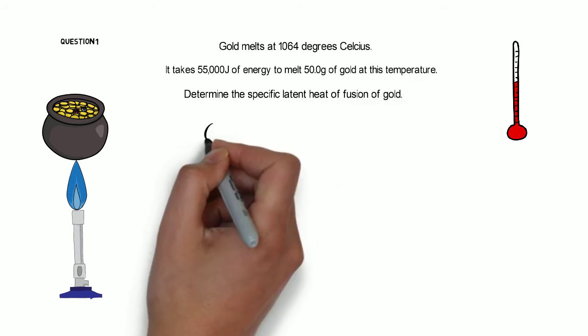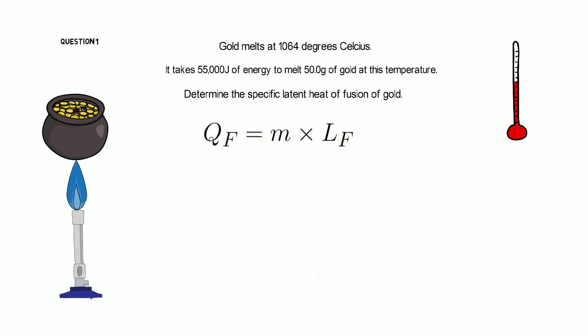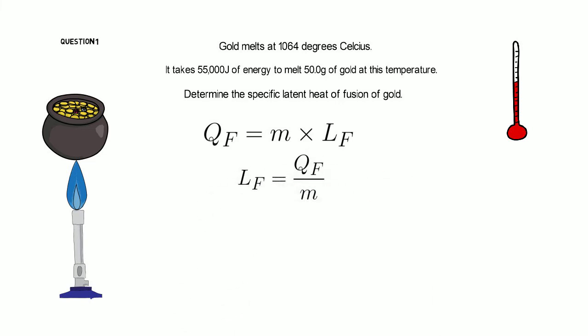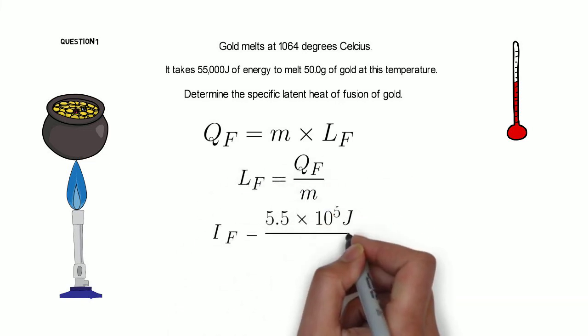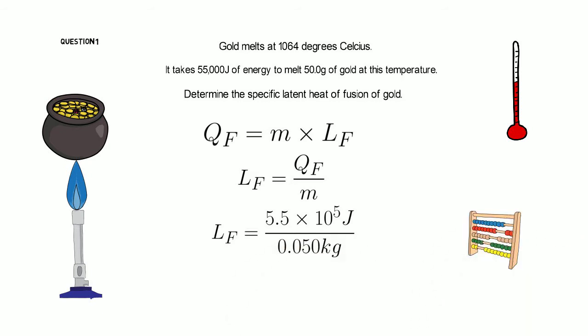We start with the equation: latent heat equals mass times the latent heat of fusion. We rearrange to solve for the latent heat of fusion, put in our known values, making sure to change grams to kilograms. With a little calculator work, we get the latent heat of fusion as 1.1 × 10^6 joules per kilogram.